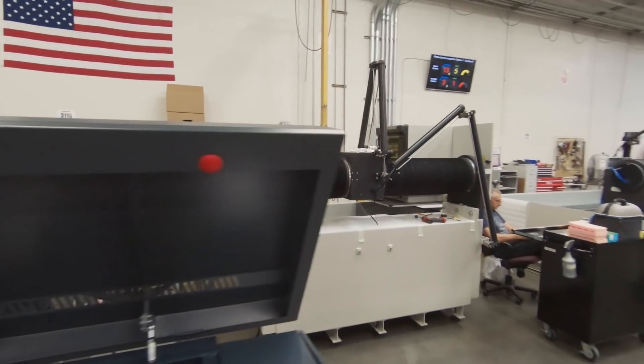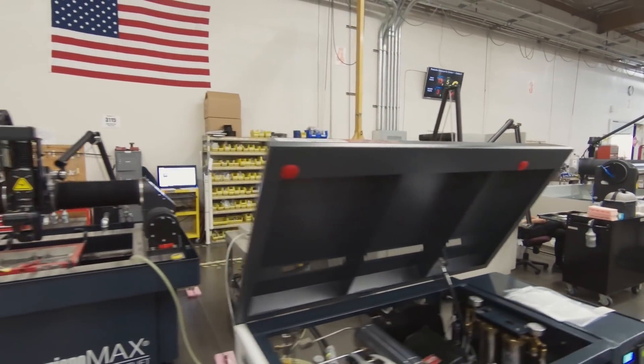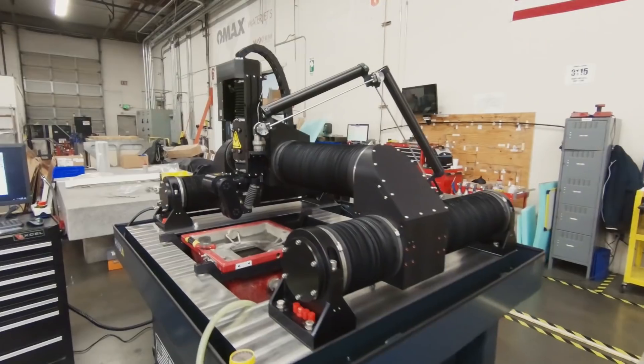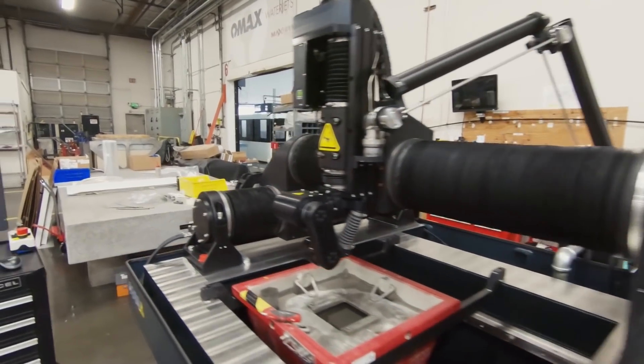The OMAX cantilever line is where we assemble the most accurate water jet machine on the planet, the Micromax. The Micromax takes abrasive water jet machining to new levels of precision. Years of research and development have resulted in an abrasive water jet capable of machining incredibly small features with extreme precision.